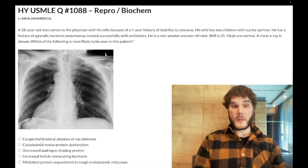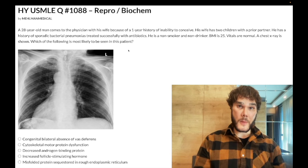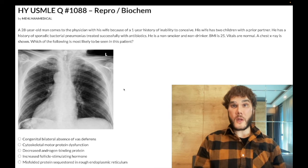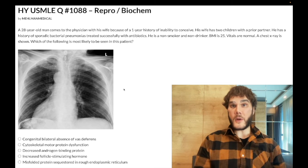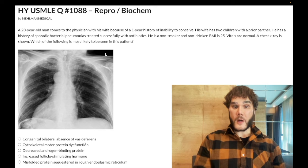The correct answer is cytoskeletal motor protein dysfunction. It sounds nebulous, but we can eliminate to get there. The diagnosis is Kartagener syndrome. The vignette might sound like CF — recurrent pulmonary infections — but they give you dextrocardia or full-blown situs inversus. They might say a large mass is palpated beneath the ribs on the left, implying the liver is on the left when it should be on the right. Or they'll show you the chest X-ray.